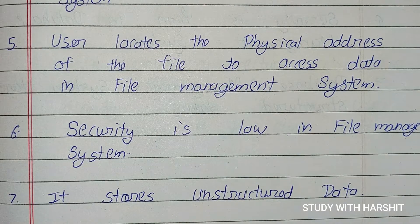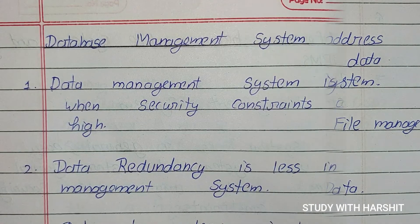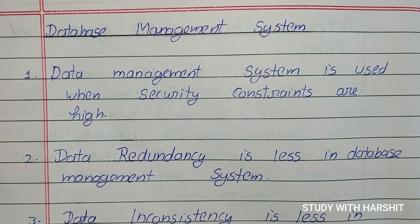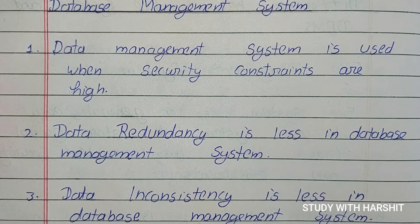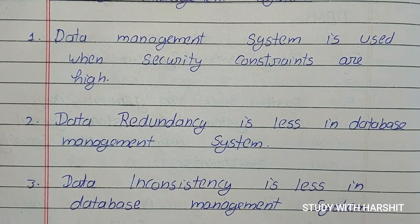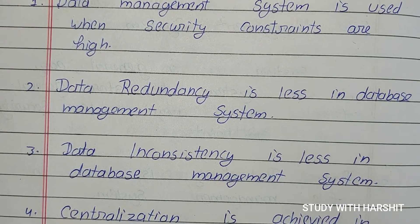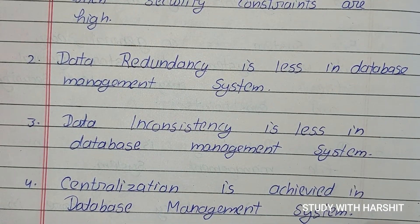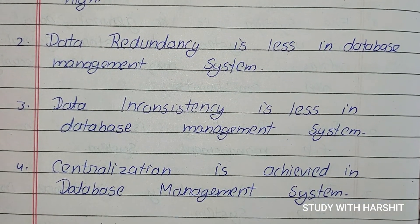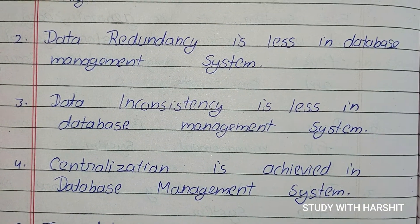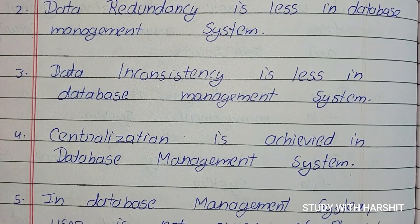File system stores unstructured data. Database management system: DBMS is used when security constraints are high. Data redundancy is less in database management system. Data inconsistency is less in database management system. Centralization is achieved in database management system.